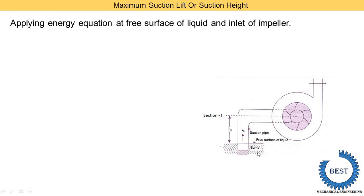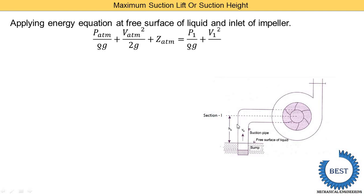At the sump level we have atmospheric conditions. Applying Bernoulli's equation: pressure energy at the sump is p_atmosphere / ρg, plus velocity energy v_atmosphere² / 2g, plus datum head z_atmosphere, equals the energy at the inlet of the impeller: p1 / ρg + v1² / 2g + z1, plus friction losses in the suction pipe hfs.